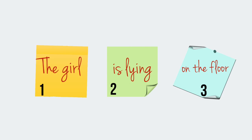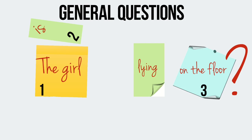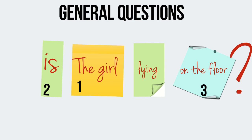This is a standard statement: The girl is lying on the floor. Number one: the girl. Number two: is lying. Number three: on the floor. Let's look at how we make a general question. And now this is a question: Is the girl lying on the floor? To make a general question in present continuous, you just need to put the verb TO BE before the subject. Is the girl lying on the floor?